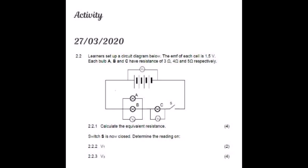The scenario says: let us set up a circuit diagram. The EMF of each cell is 1.5 volts, so we can update our diagram as we read the scenario. We have four cells, and each cell has an EMF of 1.5 volts — keep that in mind.